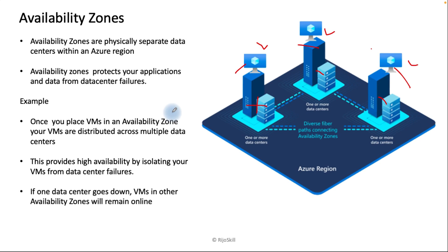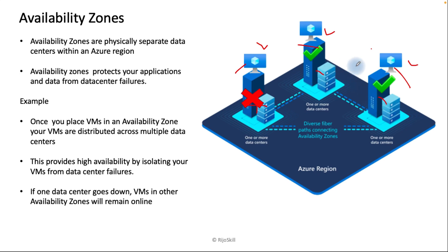For example, if one data center goes down, VMs in the other Availability Zones will remain online. As you can see here, if this data center fails, the remaining zones are still available. So you will not face a single point of failure — your application will always be available.